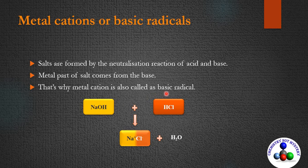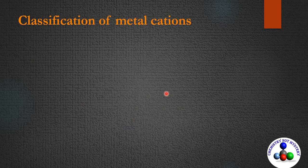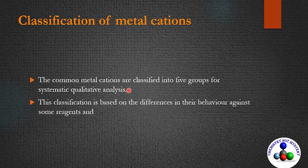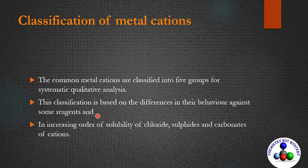The common metal cations are classified into five groups for systematic qualitative analysis. This classification is based on the difference in their behavior against some reagents and in the increasing order of solubility of chlorides, sulfides, and carbonates of the cations.